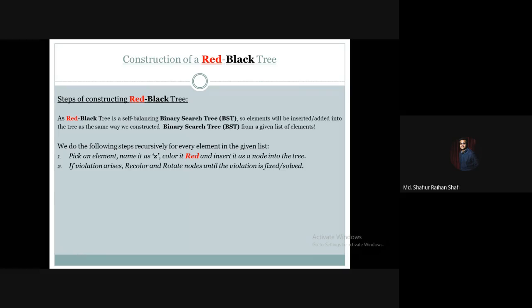The first step is to pick an element, name it Z, color it red, and insert it as a node into the tree. Then upon this insertion, a violation may occur. If a violation arises, we have to recolor and re-rotate nodes until the violation is fixed or solved.